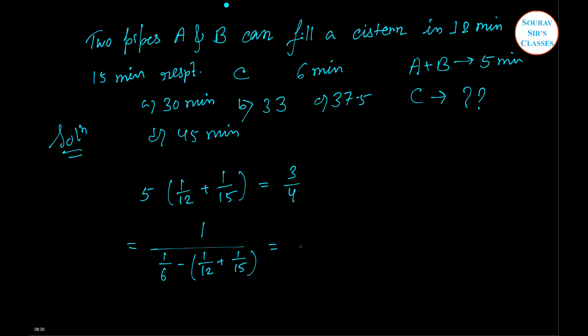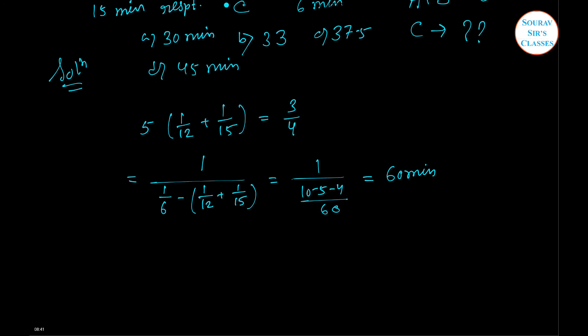That equals 1 by (10 minus 5 by 4 by 60), which equals 60 minutes. So the time taken to empty 3 by 4 part of the cistern equals 3 by 4 into 60, which equals 45 minutes. So option D will be the right answer.